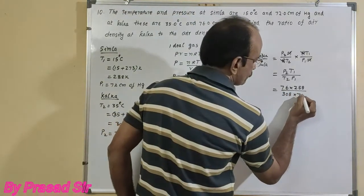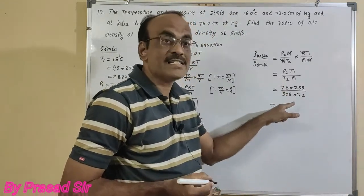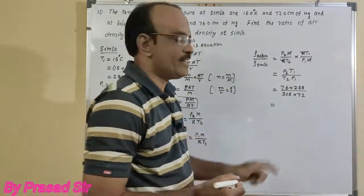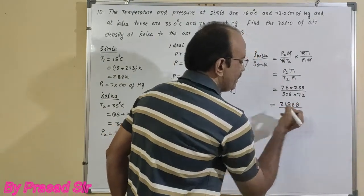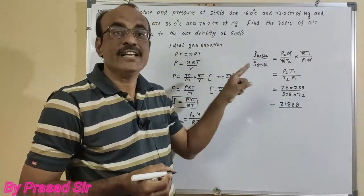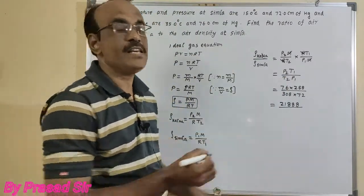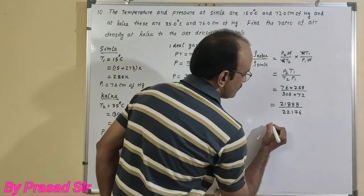On multiplication, 76 into 288 is 21,888, divided by 308 into 72 which equals 22,176.